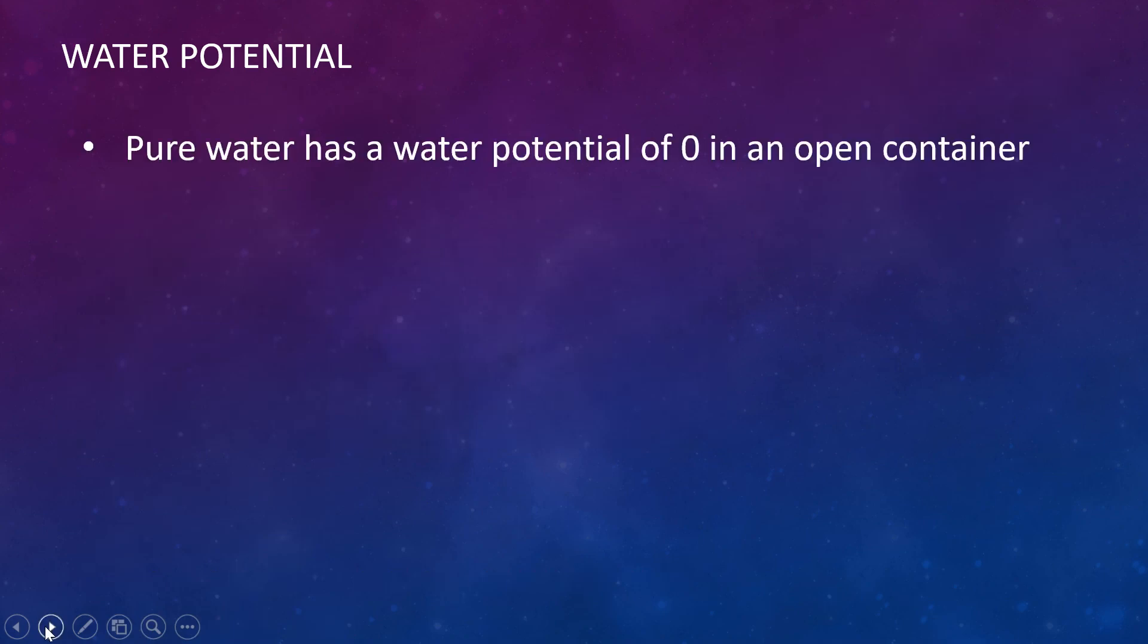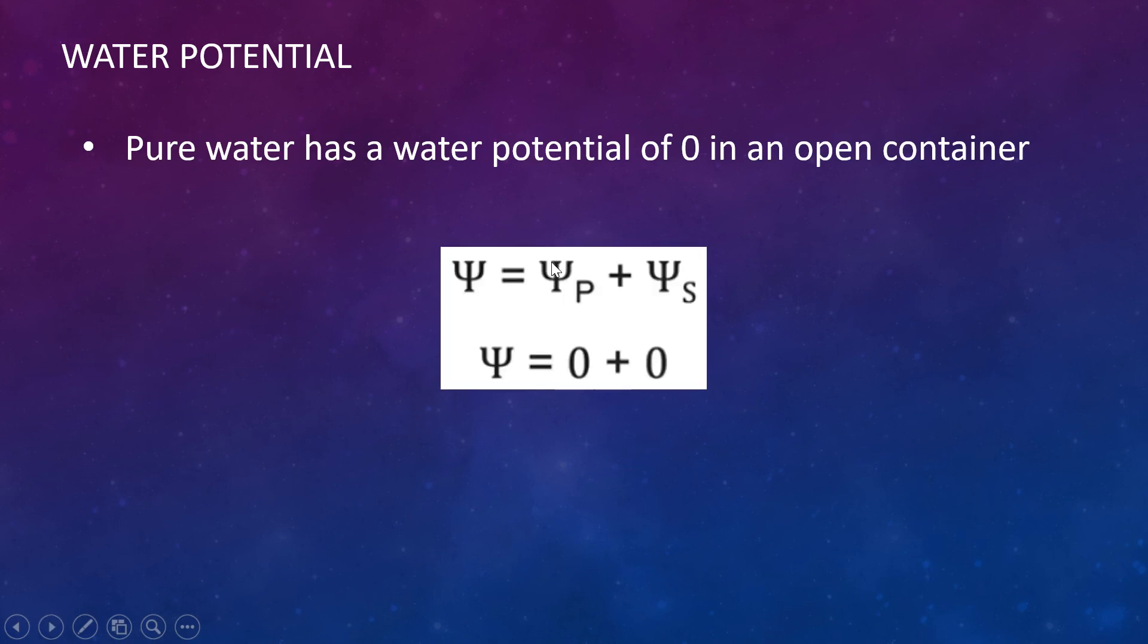So pure water has a water potential of zero in an open container. So the water's not really going anywhere. So the water potential is equal to zero. It has no solutes and no pressure. So this Ψp stands for pressure. It has no pressure because it's in an open container. It has no solutes because it's pure water. It has zero, so that means it's overall water potential is zero because both of these things, the solutes and the pressure, are taken into account on how much the water will actually move itself.